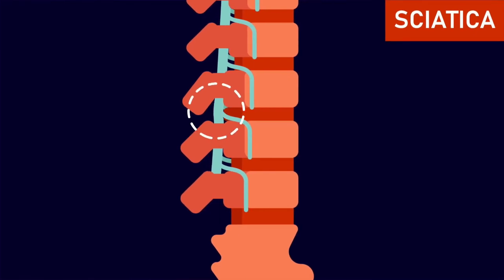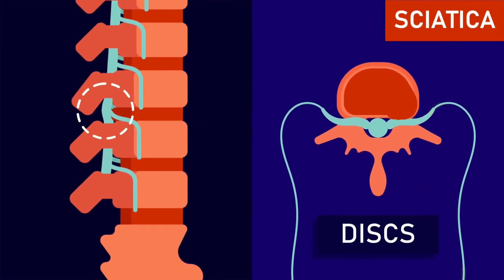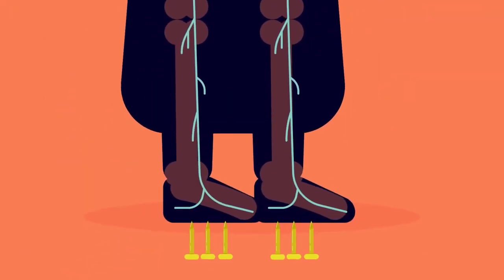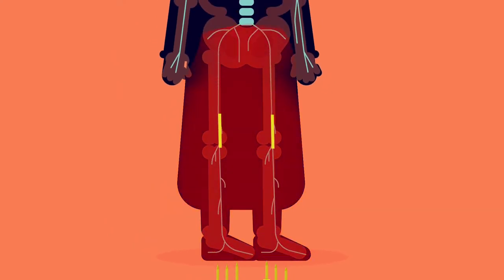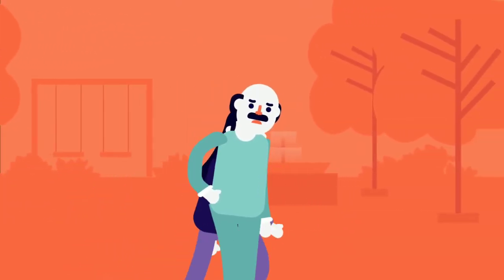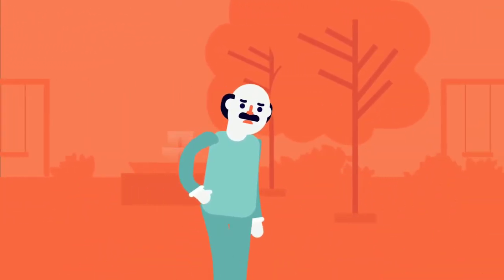Sciatica is caused by the irritation or compression of sciatic nerve roots in the spine. This may result in pain, numbness, or tingling sensation in the legs. Pain travels all the way down the leg and foot. Fortunately, 60% of people recover fairly quickly, although in some cases it may take a number of months.